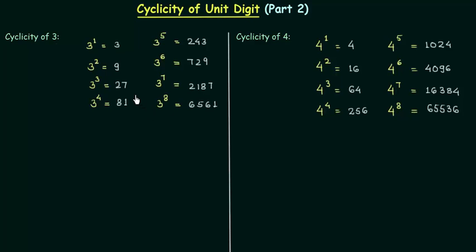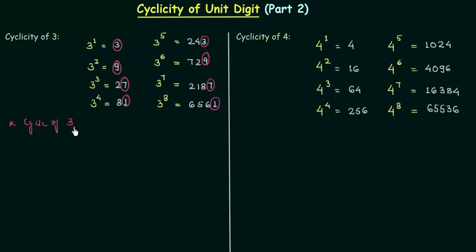We have to focus on the unit place. 3 raised to power 1 gives us 3 at the unit place, then we have 9, 7, and 1 — and in these 4 numbers we again have 3, 9, 7, 1 at the unit place. So after every 4th interval 3, 9, 7, 1 are repeated. The cycle of 3 is 3, 9, 7, 1.